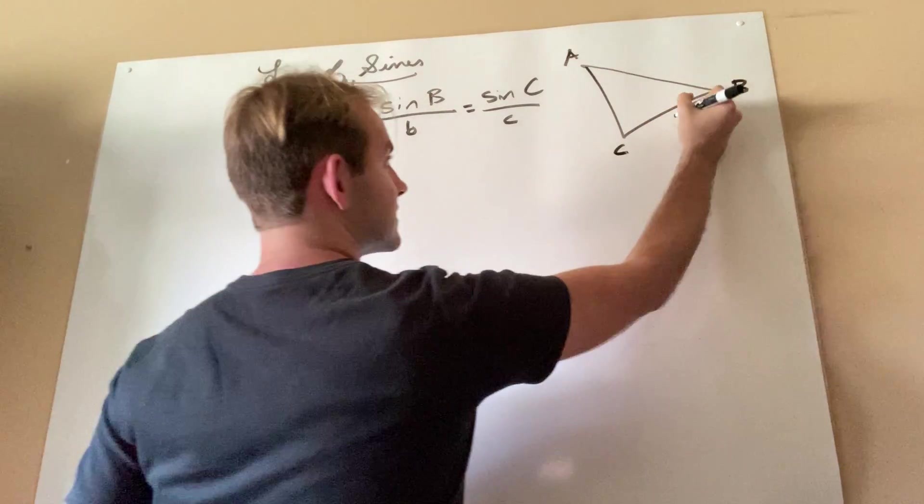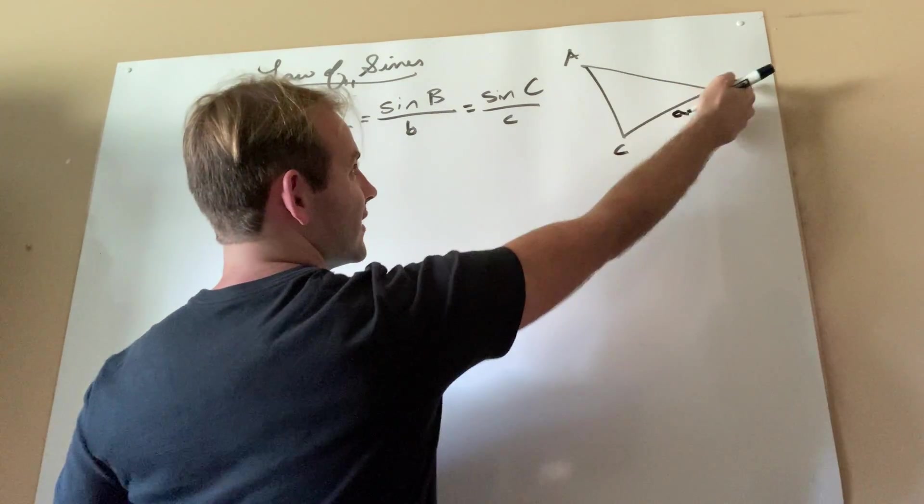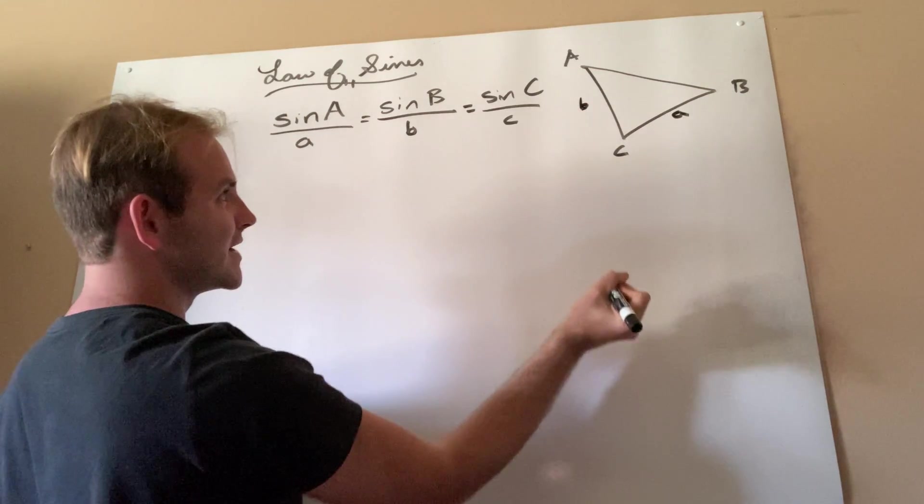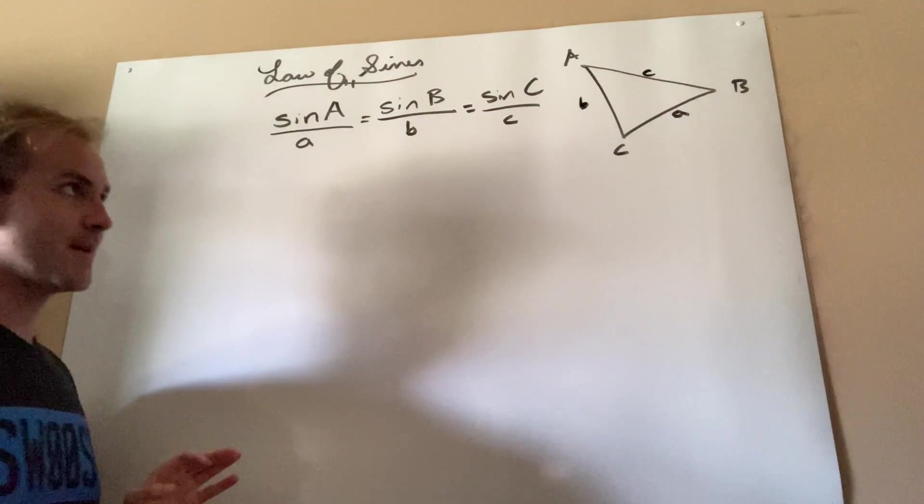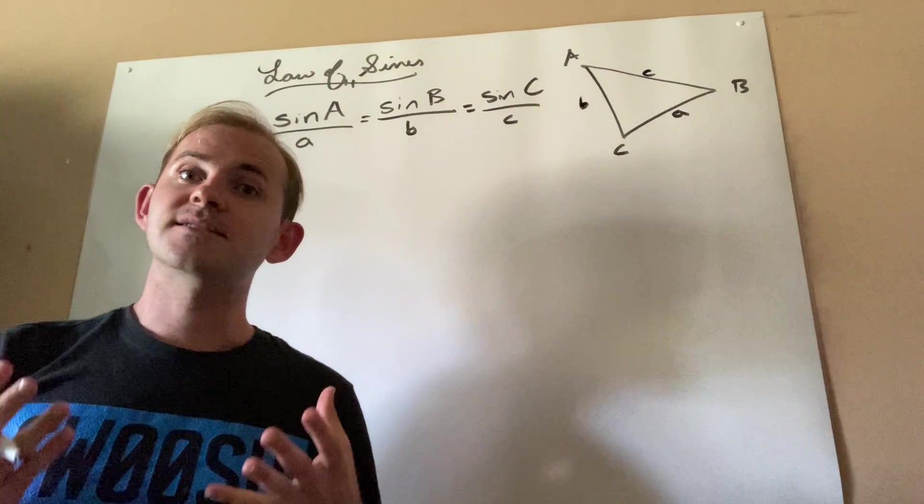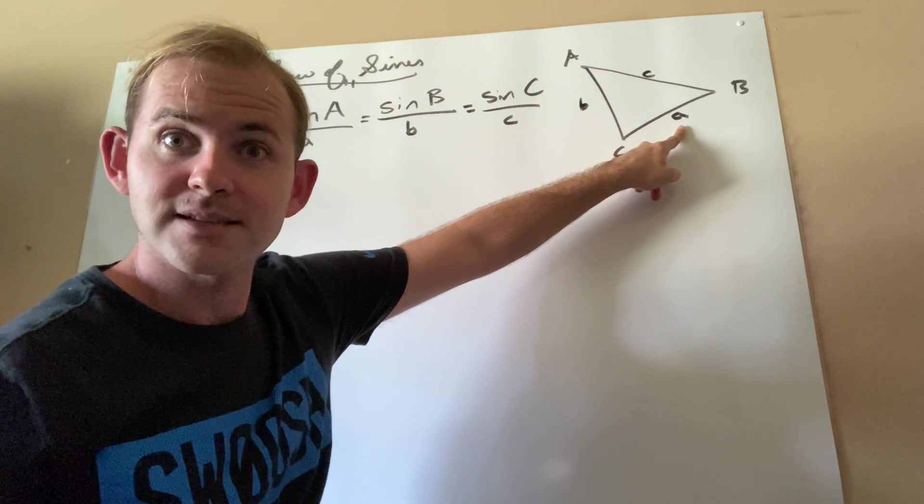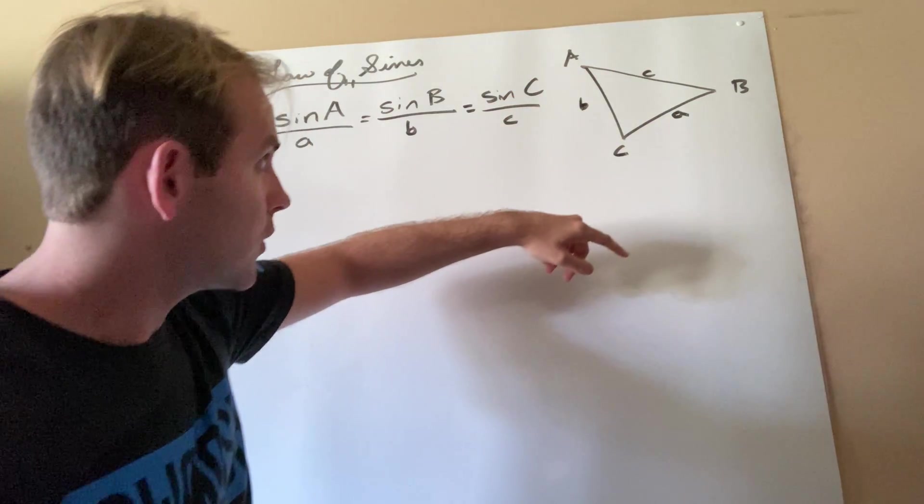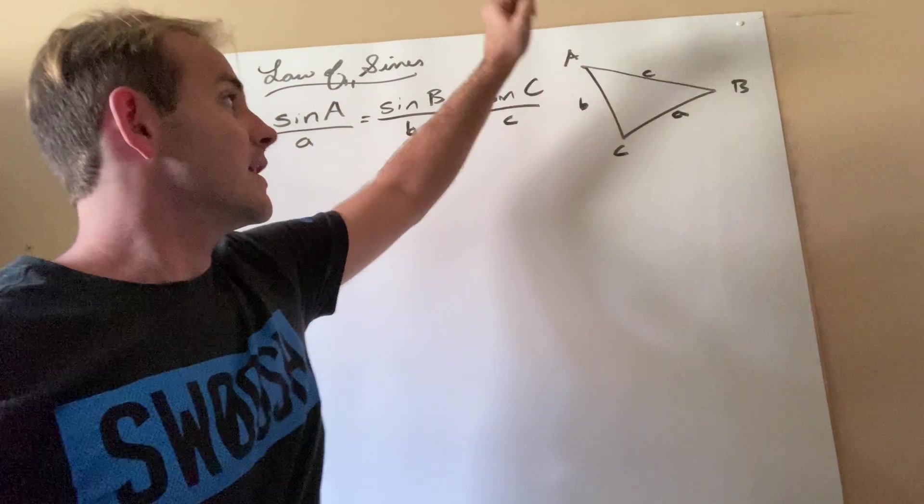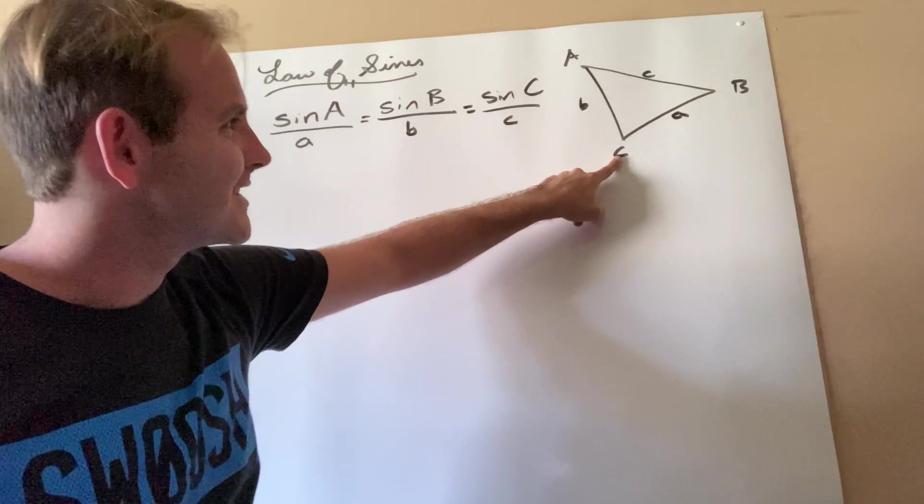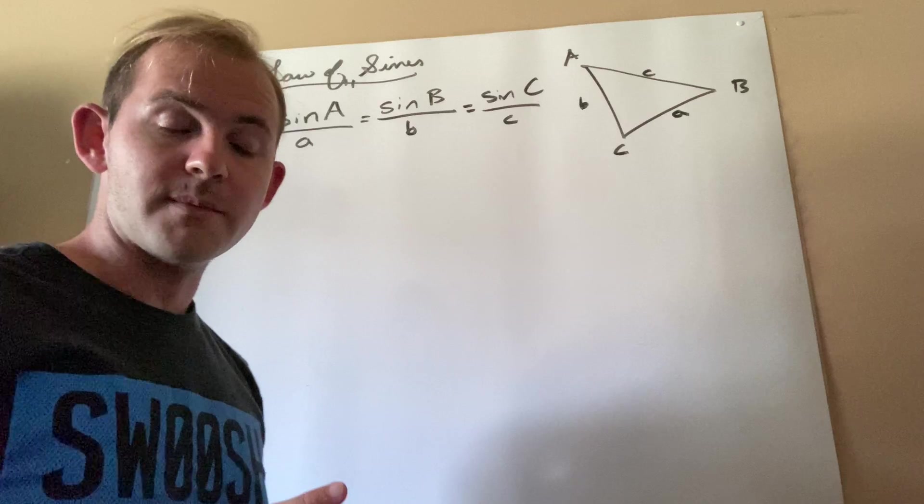using capital letters, the side across from a would be little a, the side across from big b would be little b, and the side across from big c would be little c. So what we're saying is that the sine of this angle divided by the length of this side across from it is equal to the sine of this angle divided by the side across from it is equal to the sine of this angle divided by the side across from it.